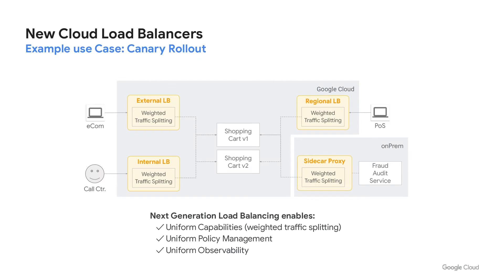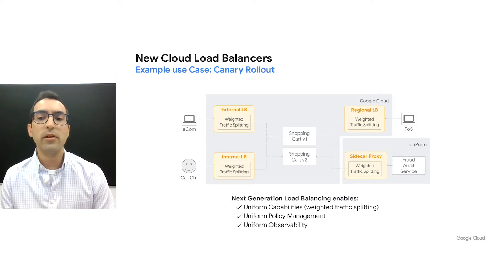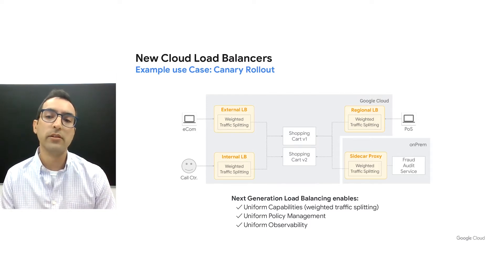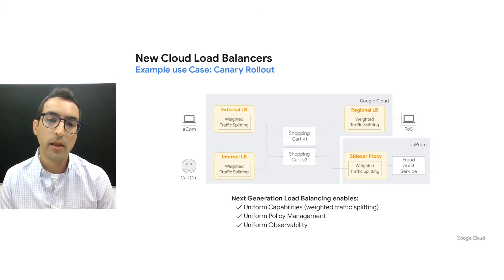An example of this unified feature set is where a customer leverages weighted backend services across global and regional external load balancers, internal load balancers, as well as on-premise through Traffic Director to enable canary testing of a new version of their distributed application. By incrementally varying the weights, the customer is able to safely deploy a new feature or version of the application in a coordinated manner across all balancing use cases for their architecture. Next, I will hand off the session to Hisham, who will present on Snapchat's journey from a monolithic application to microservices by leveraging Envoy.